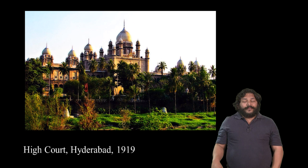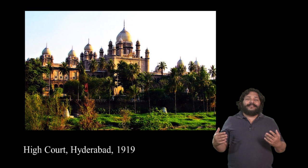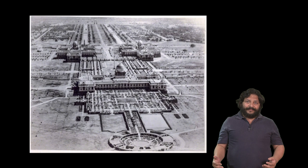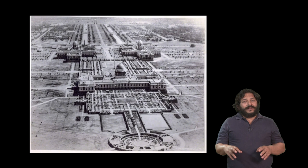The high courts in Hyderabad are another example of an institution that is British — a plan that is British but details that reflect a native vocabulary of architecture. When it came time to design a completely new capital for Imperial India, the site chosen was New Delhi. The capital of India moved from Calcutta to Delhi in 1911 and the new site took a couple of decades to build fully.